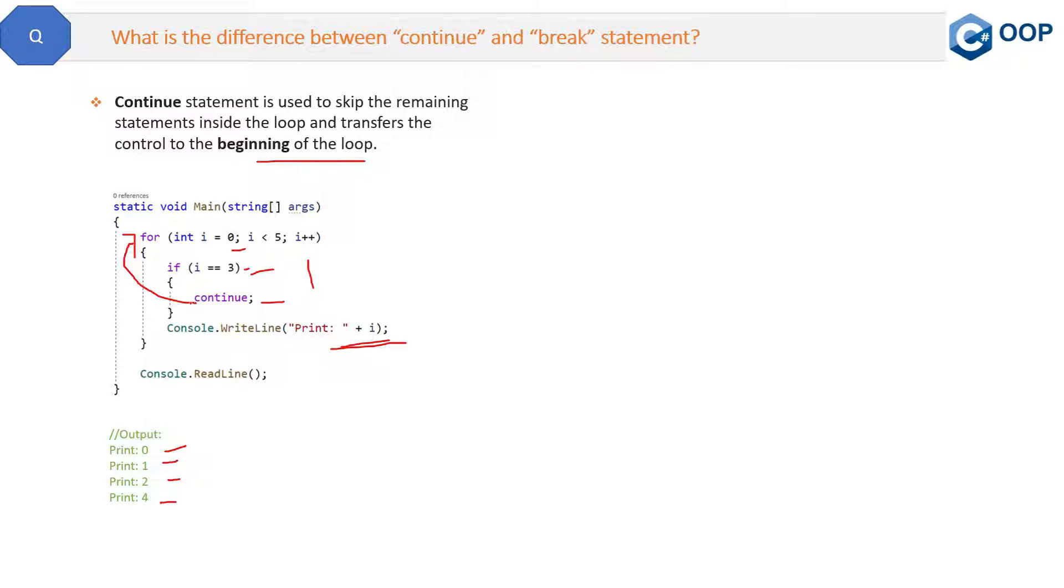Because at 3 we have this continue which does not allow the statement to execute further. Rather, it will send it back to the starting of the loop. So that is the continue statement.